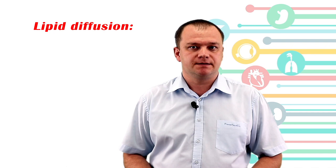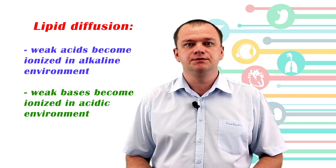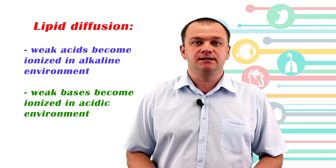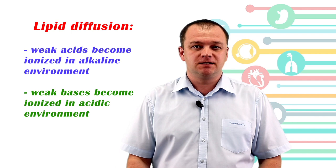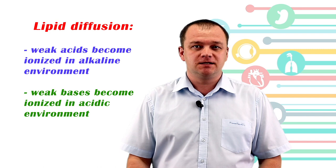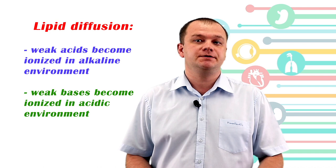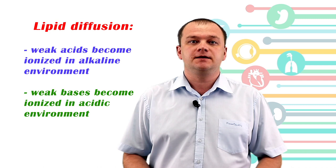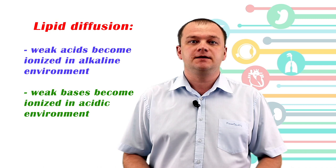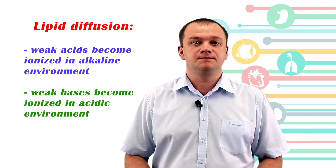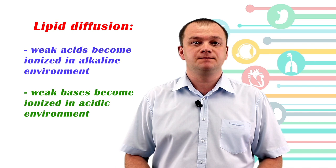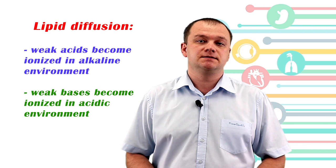To easily memorize this concept, think about acids: acids produce an acidic environment with low pH, very rich in hydrogen ions. If we have an environment rich in hydrogen protons, it is difficult to add more — so dissociation from acids is difficult in acidic environments but much easier in alkaline environments. In the case of bases, it is much easier to accept a proton when many hydrogen protons are available, so acids become more ionized in alkaline environments and bases become ionized in acidic environments.